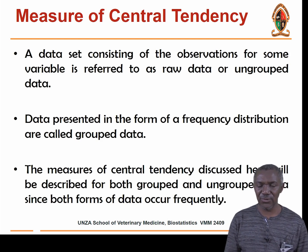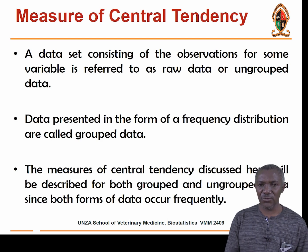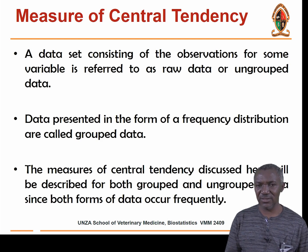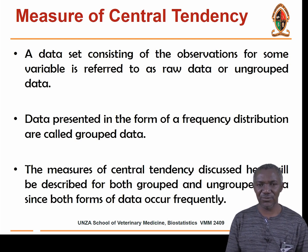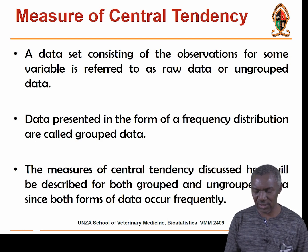When grouping data, you organize to see how many animals are Frisian, how many are Angoni, how many are Tonga breeds. You group them so that you have frequencies where you are able to count the number of animals in a particular breed — putting them into frequency distributions. The measure of central tendency can be applied to both grouped and ungrouped data.